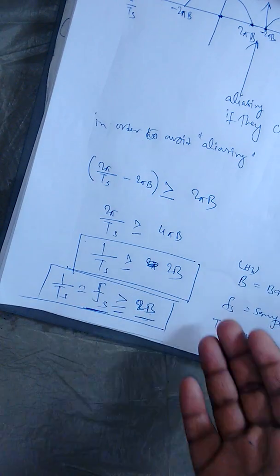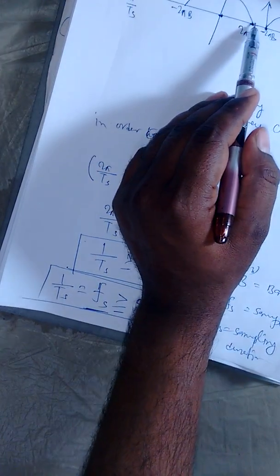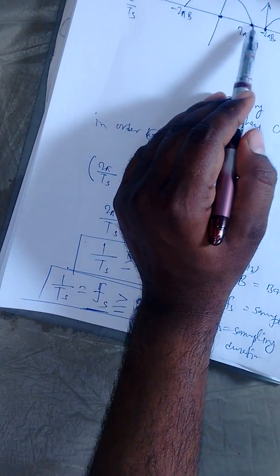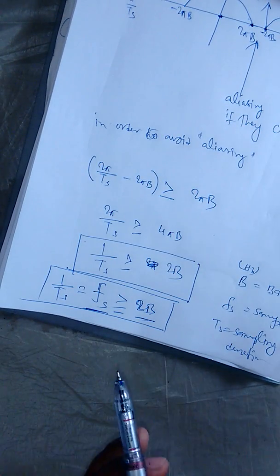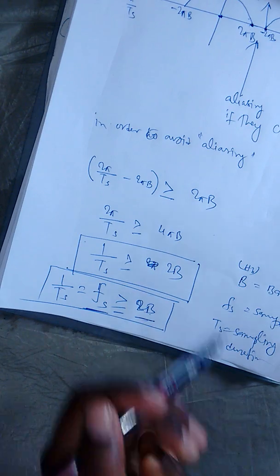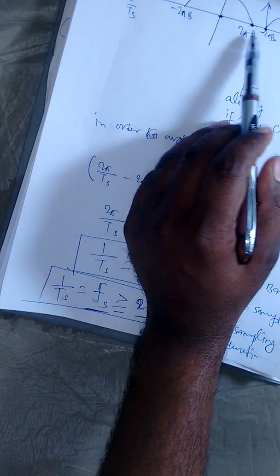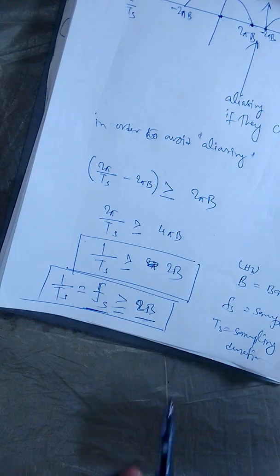The Nyquist sampling theorem states that the sampling frequency must be greater than or equal to 2·beta — that is, twice the bandwidth. We can keep it as large as we want, but at minimum it must not cross below 2·beta. The minimum condition to avoid aliasing is that the sampling frequency must be equal to or greater than 2·beta. Thank you, I hope you understood the concept.